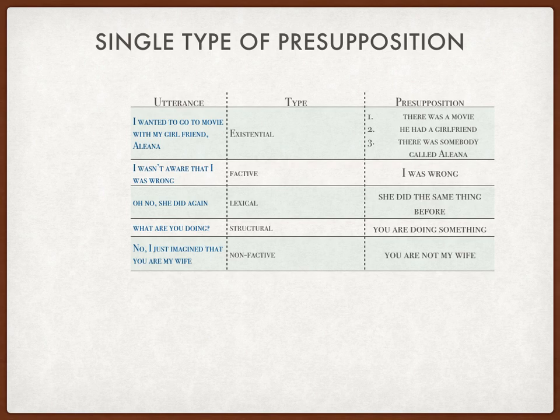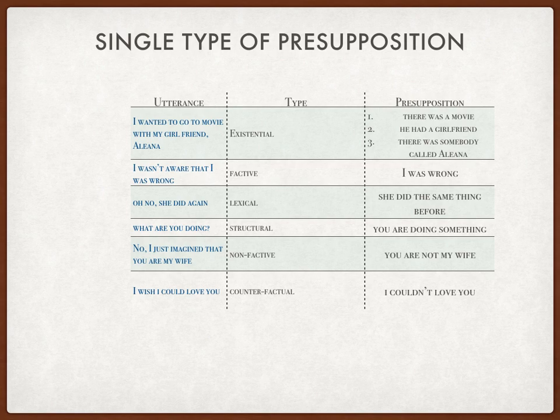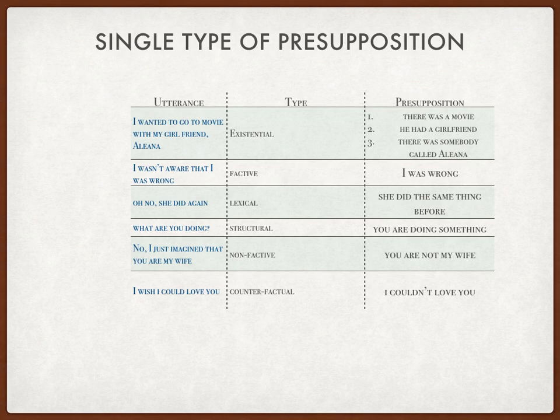The last single-type example is: 'I wish I could love to.' This is the counterfactual type of presupposition because there is the word 'wish,' indicating very low or no possibility. This means the presupposition from 'I wish I could love to' is: I couldn't love to.